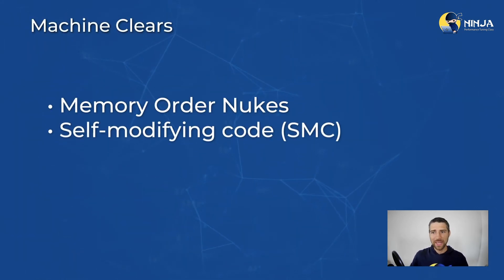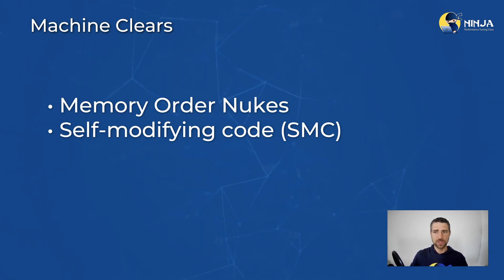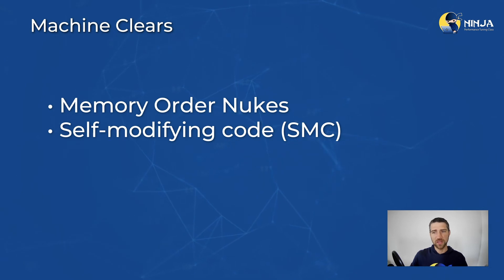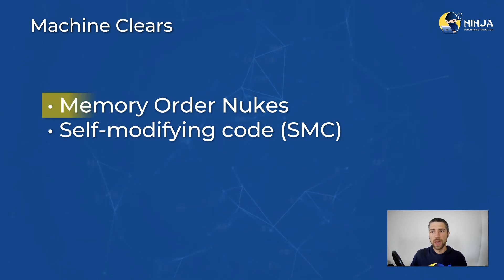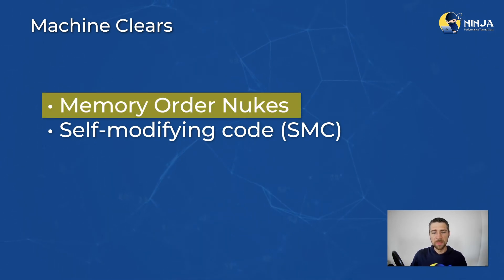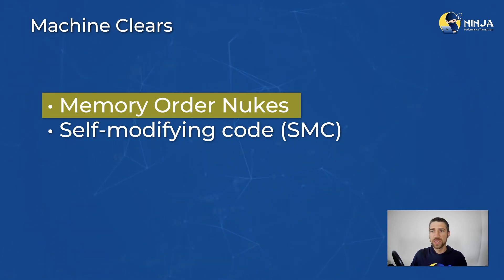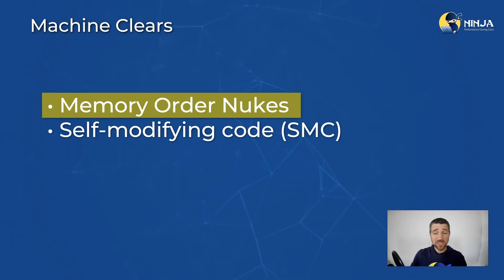That was one of the subcategories of bad speculation. Let's look at the second one, which is called machine clears. It happens much less frequently and there is a small chance you will ever have to deal with such problems. Nevertheless, for completeness, let's take a look at one example: memory order conflicts, also sometimes called nukes. A memory ordering conflict occurs in a multi-threaded program when a store executed in another thread hits a load speculatively executed in the current thread that is not yet retired. Let's take a look at the example.